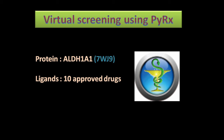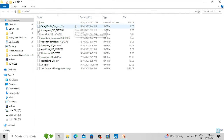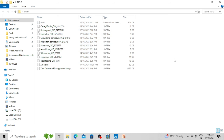PyRx has a graphical user interface, which is another benefit of the software. In this virtual screening tutorial, I am going to use aldehyde dehydrogenase 1A1 as the protein molecule — the PDB ID of this protein is 7WGN — and I am going to use 10 approved drug molecules as ligands. I have already downloaded these drug molecules and the protein molecule into my input folder. The protein is in PDB format and the 10 drug molecules are in SDF format.